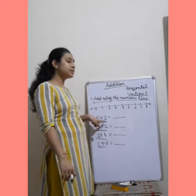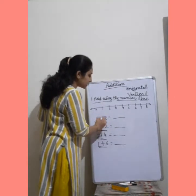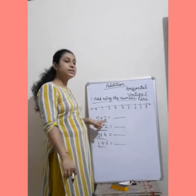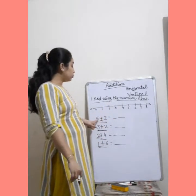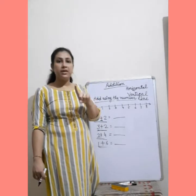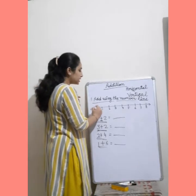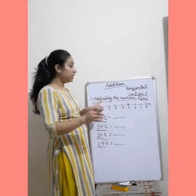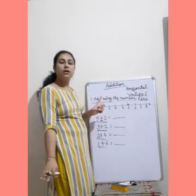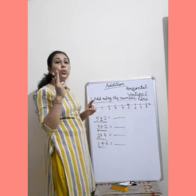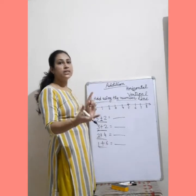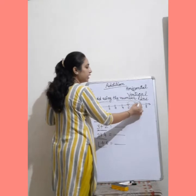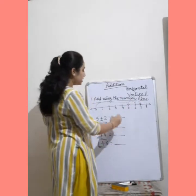Firstly, बेटा, आपका क्या है? 5 प्लस 2. अब देखो, यह addition का sign है — plus. 5 प्लस 2. देखो, first आपका जो number है, वो क्या है? 5. तो आपने 0 से सीधा jump करना है 5 पे. जो first digit होगा, आपने 0 से सीधा उसी पे jump कर देना है. Next — second digit क्या है? 2. तो आपने 2 step आगे जाना है. 5 से — 6, then 7. Your answer is 7.